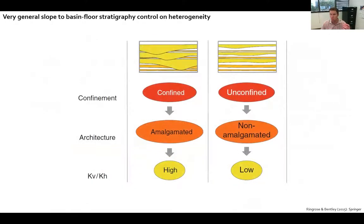For slope to basin floor stratigraphic units, these are two end-member insights into stratigraphic controls on heterogeneity. On one end of the spectrum, more confined systems are limited in aerial extent or in width, but then they stack vertically, so they can be really well connected vertically and have relatively high KV/KH.